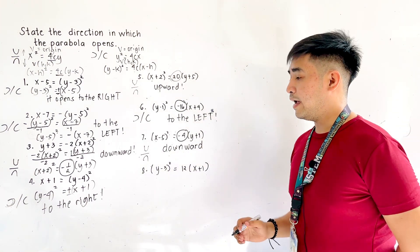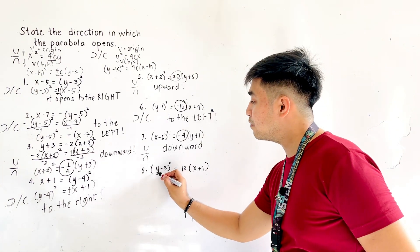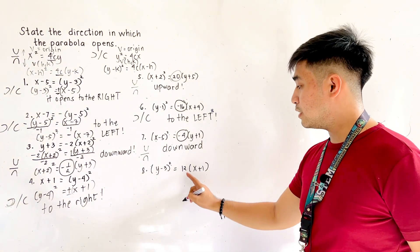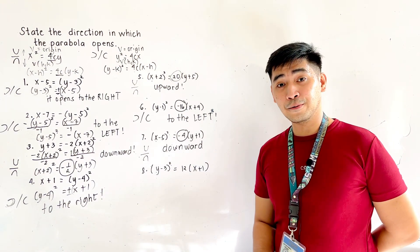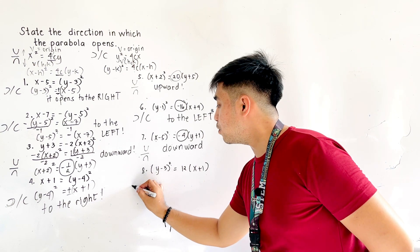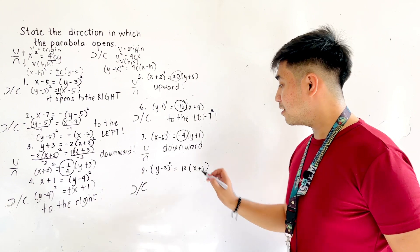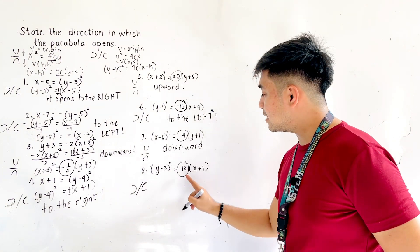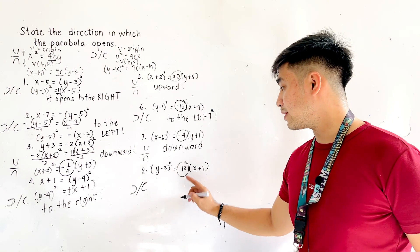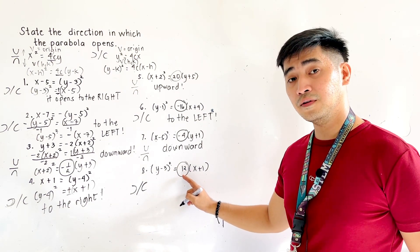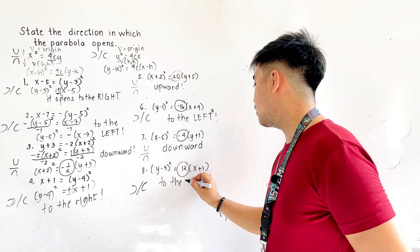For the last one, we are given y minus 3 quantity squared is equal to 12 times the quantity x plus 1. Since we have y squared, it is opening to the left or to the right. The right side is positive 12, so this parabola is opening to the right.